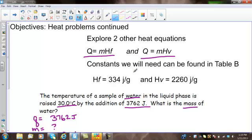Constants needed to use these formulas are found in Table B. h sub f, heat of fusion, is a constant, 334 joules per gram. And h sub v is heat of vaporization, which is 2260 joules per gram.